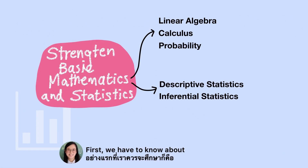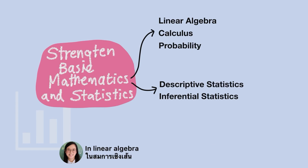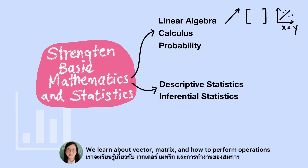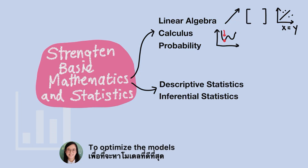First, we have to know about basic mathematics and statistics. This helps in a better understanding of machine learning algorithms. In linear algebra, we learn about vectors, matrices, and how to perform operations. We will need calculus to understand derivatives and gradients to optimize the models.